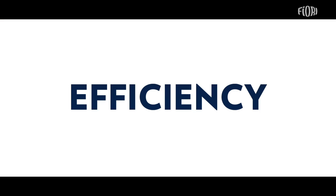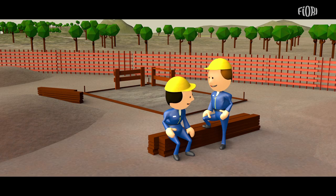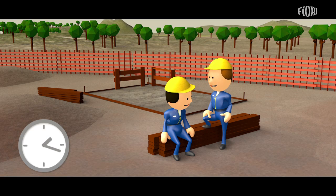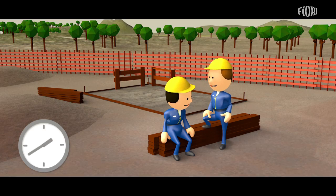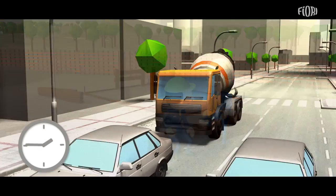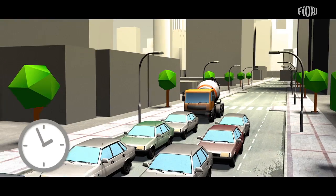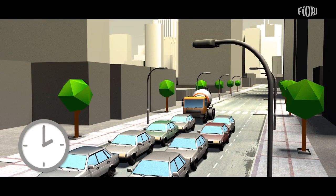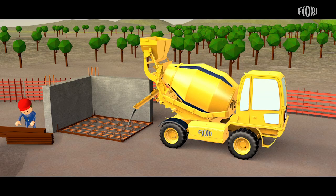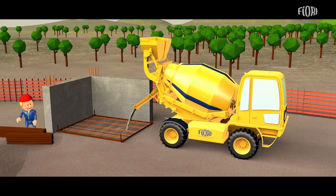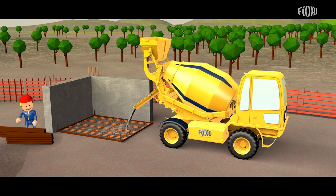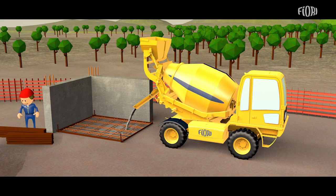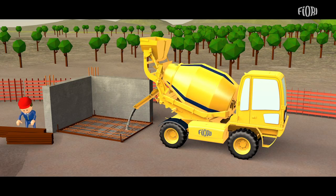Efficiency. When you rely on a concrete batching plant, the building site cannot get on with its work until the mixer truck arrives, and this can take a long time. The Fiori solution enables you to produce and cast concrete independently. This reduces the length of building time and increases productivity.